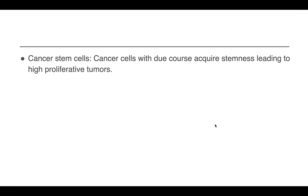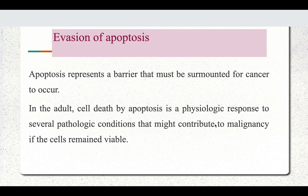Another important concept in limitless replicative potential is that certain cells behave like stem cells — they acquire qualities of stem cells, leading to highly proliferative tumors. The next step of the molecular basis of carcinoma is evasion of apoptosis. Apoptosis is programmed cell death and it represents a barrier to cancer production.